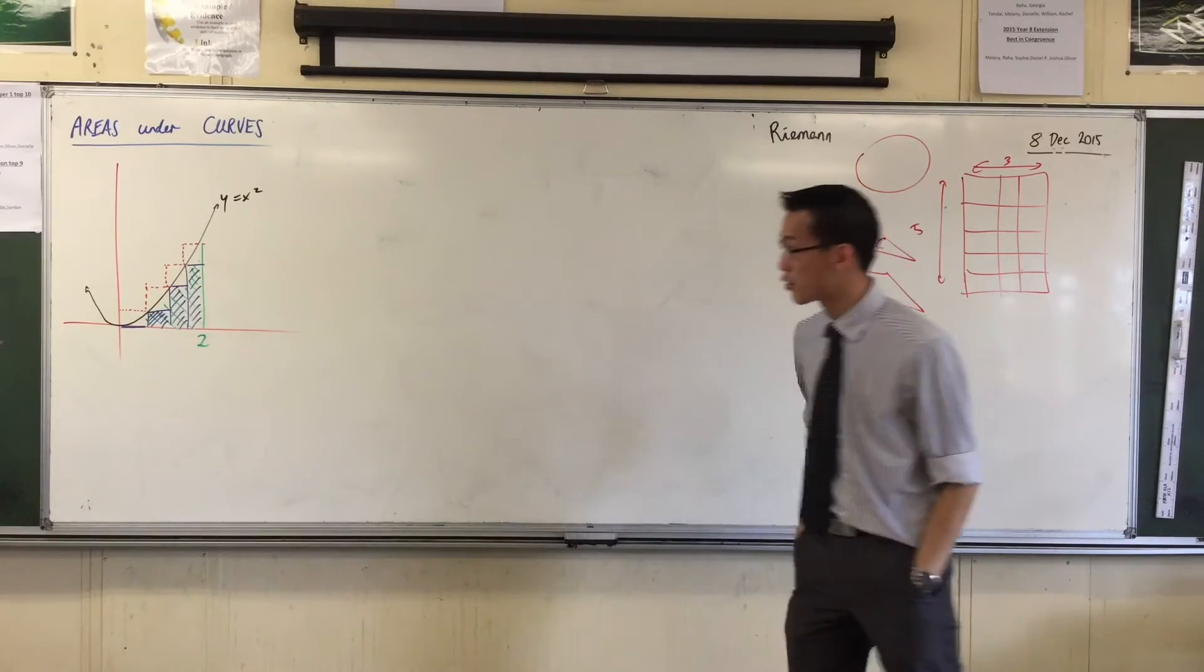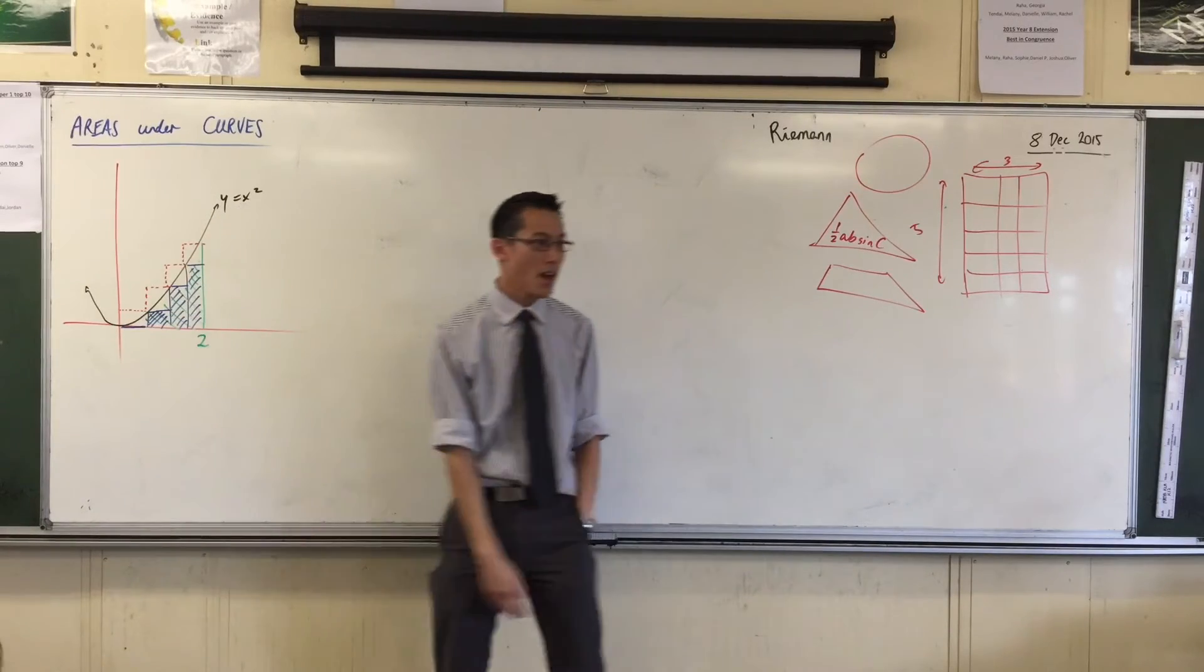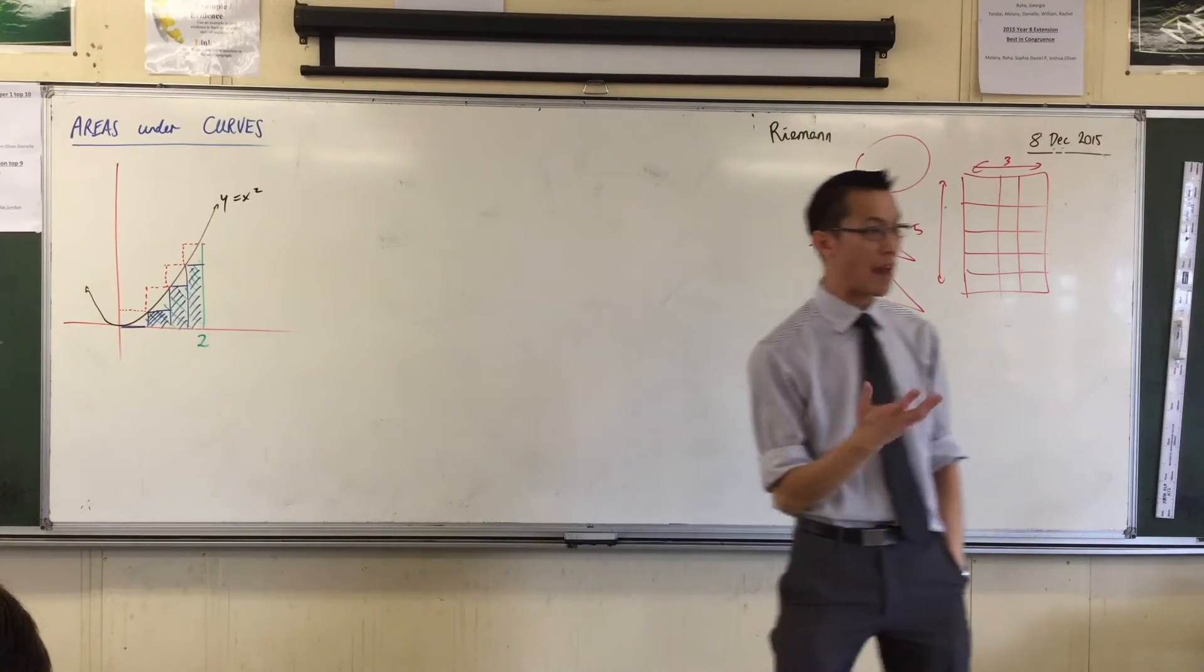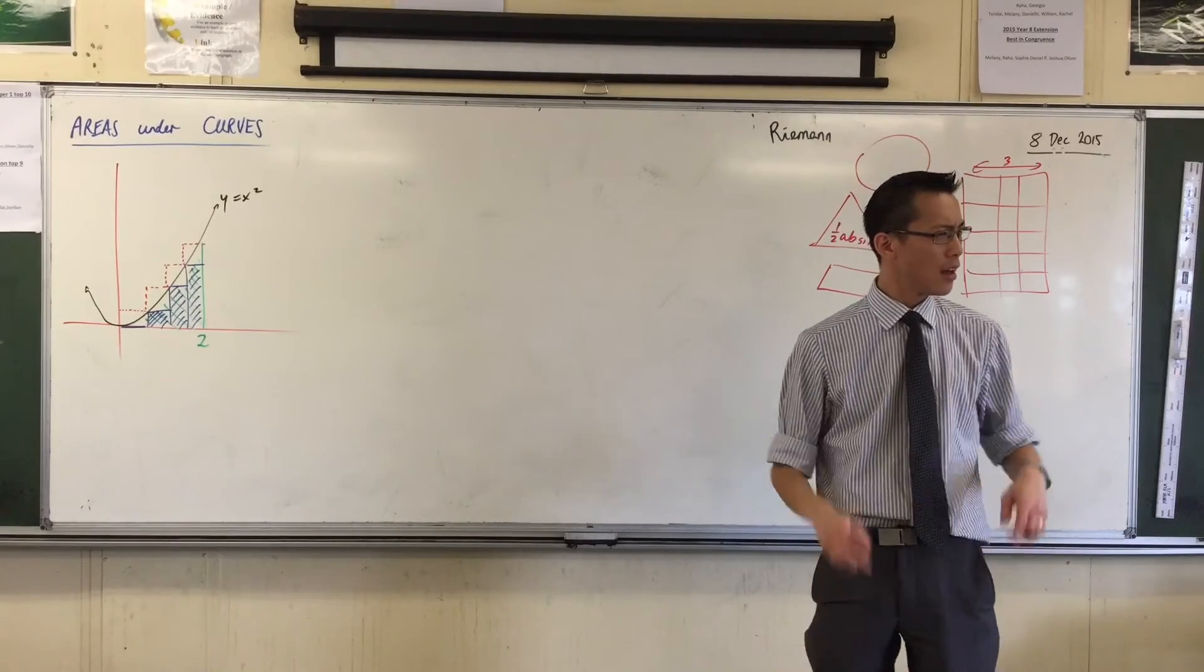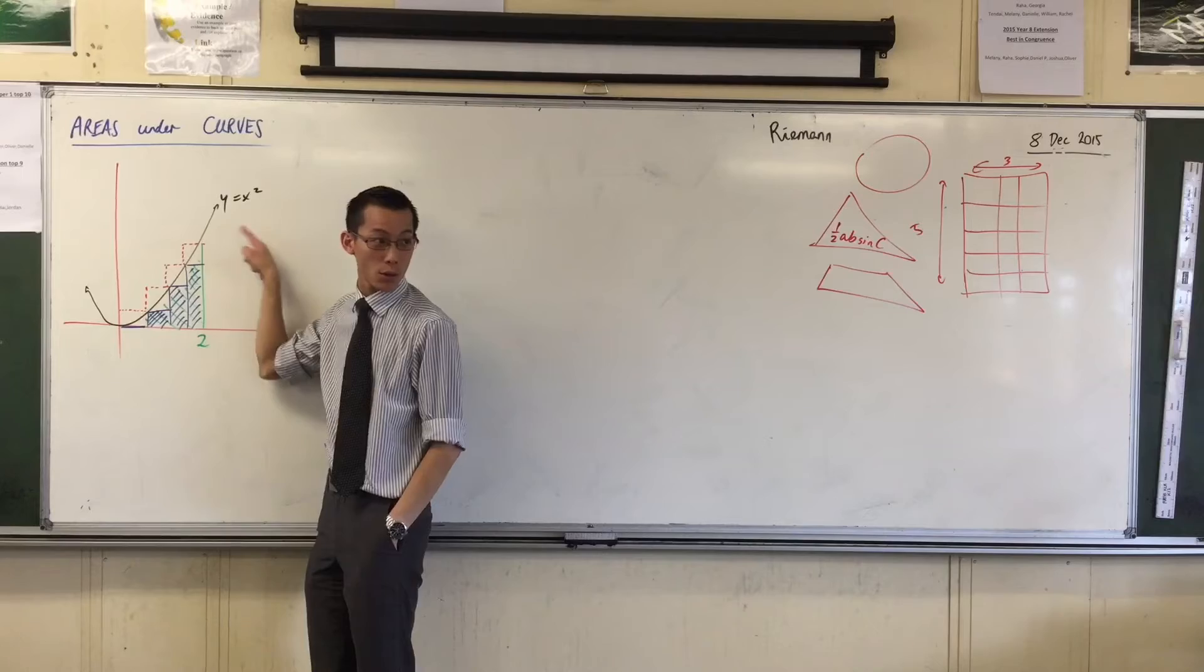Now, I'm not going to color them in because it will make my diagram too busy. If you've got enough colors, you probably can. But the areas of those four red dotted rectangles, can you see? They're always above the curve. Always above, always above, always above.